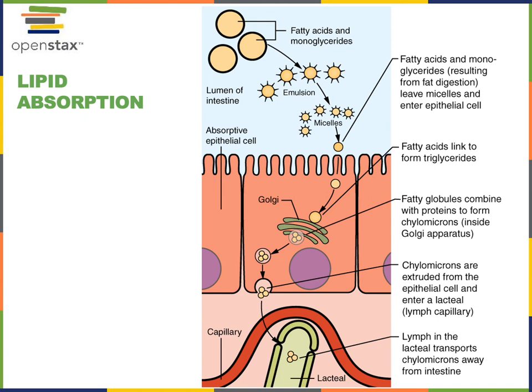The chylomicrons are too large to enter the blood at the capillaries inside the small intestine. Instead, chylomicrons will enter lacteals, which are lymphatic capillaries. The lacteals drain into larger lymphatic vessels and lymphatic ducts that eventually join to form the thoracic duct, which drains lymph into the blood at the subclavian veins.